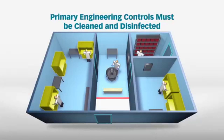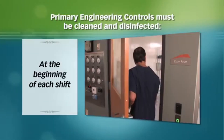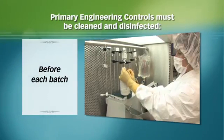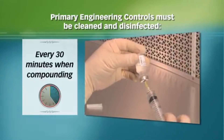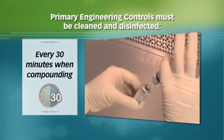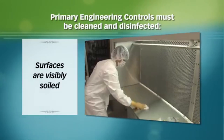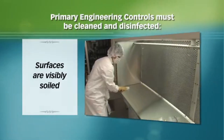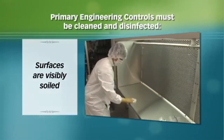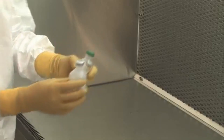Primary engineering controls must be cleaned and disinfected at the beginning of each shift, before each batch, at least every 30 minutes during compounding, and when surfaces are visibly soiled — also when surface contamination is known or even suspected.